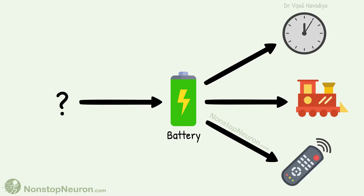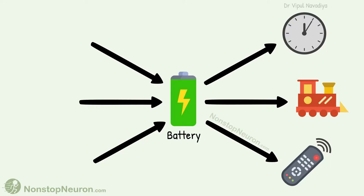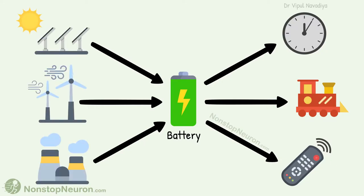But from where does the energy come to these batteries? The sources can be multiple, like solar, kinetic, thermal, etc. We harness energy from these forms, process it, and pack it into the batteries. The batteries are then used in multiple devices. Thus, batteries are like the common point in the flow of energy, and this arrangement has simplified our life in many ways.